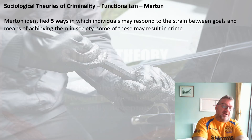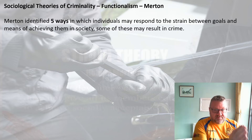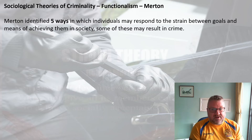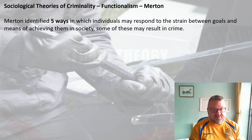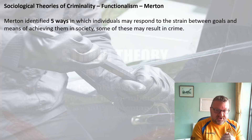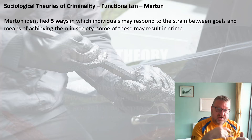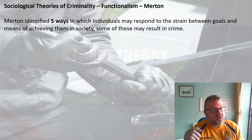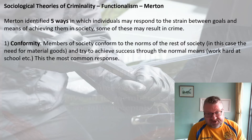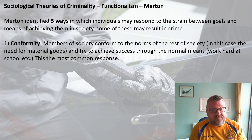Merton identifies five ways in which individuals may respond to the strain between goals and the means of achieving them — that's why it's called strain theory. You are under pressure to conform to society's goals. At the same time, you may not be able to do it, so you are under stress and strain. Merton's argument is that some people, because they're trying to pursue these goals, will resort to crime because they can't get there through normal means.